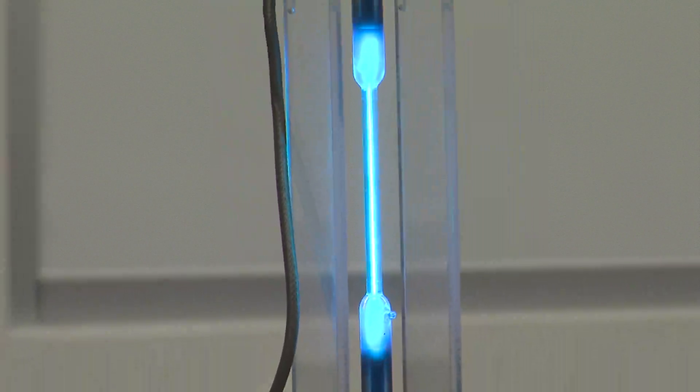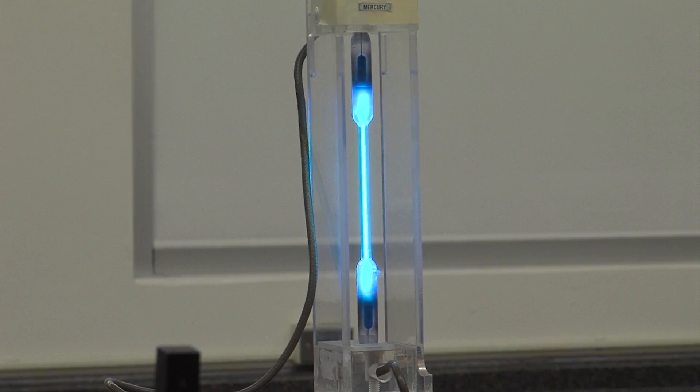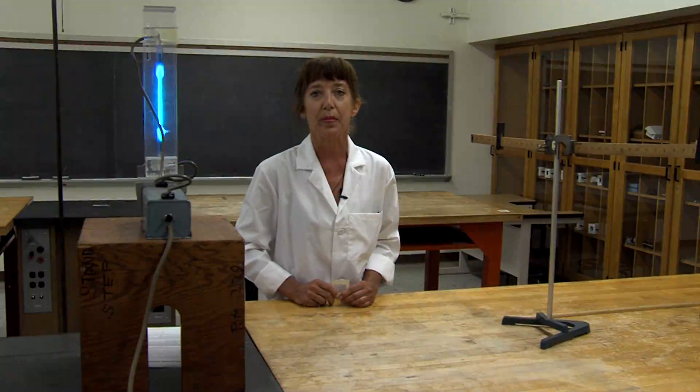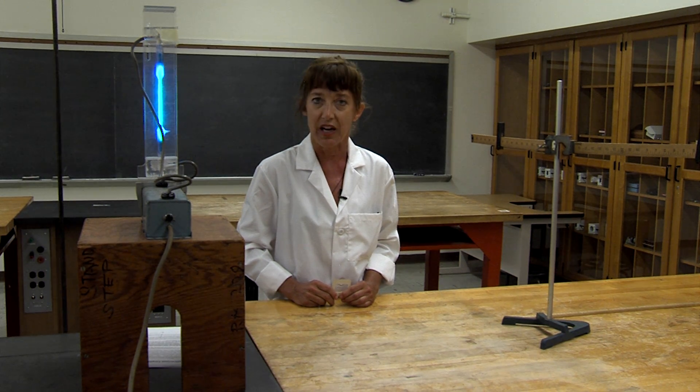This mercury lamp applies a high voltage to a tube of mercury vapor. This excites the electrons in the mercury atoms, causing them to absorb energy. These electrons can only absorb certain quantities of energy, and in doing so, enter into excited states. They occupy these states only temporarily. When they return to their normal or ground states, they release this absorbed energy in the form of photons.